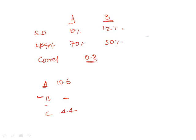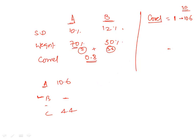Here's why: if correlation equals 1, the formula reduces to a simple weighted average. Weighted SD = (10 × 70%) + (20 × 30%) = 7 + 6 = 10.6 — the maximum. If correlation equals minus 1, it becomes 7 minus 3.6 = 4.4 — the minimum. Any other correlation gives a portfolio standard deviation between these two extremes. Correlation of 1 means no diversification benefit; correlation of minus 1 means maximum diversification benefit.